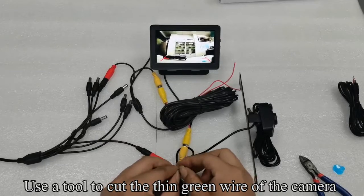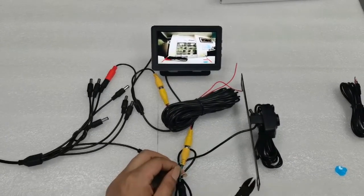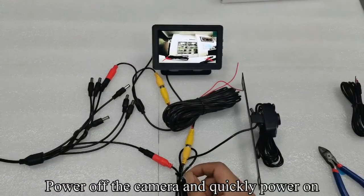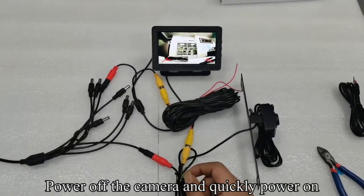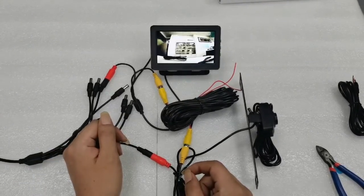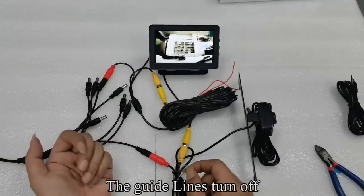Use a tool to cut the thin green wire of the camera. Power off the camera and quickly power on. The guidelines turn off.